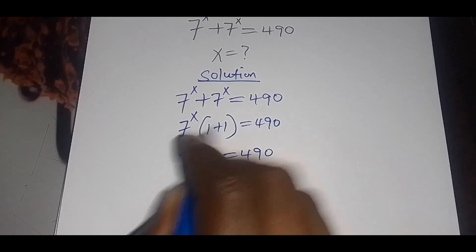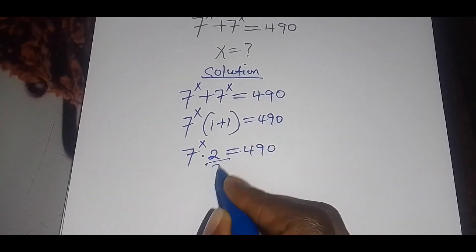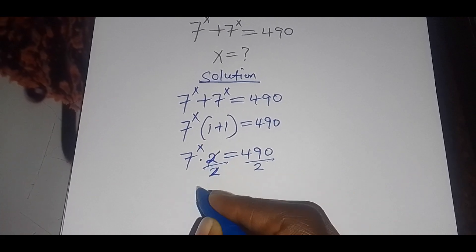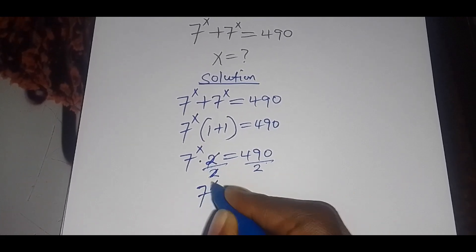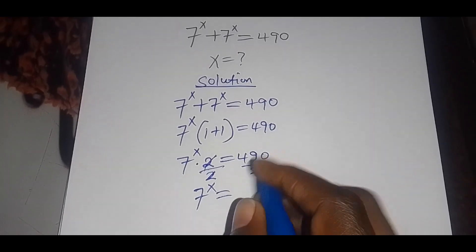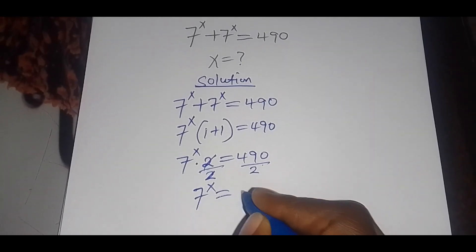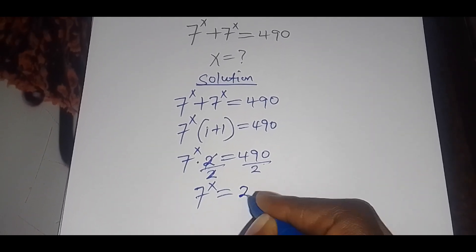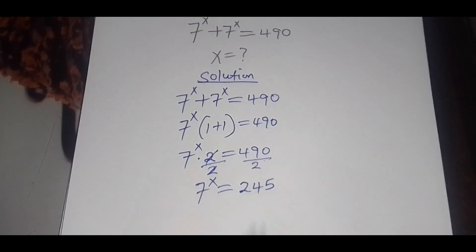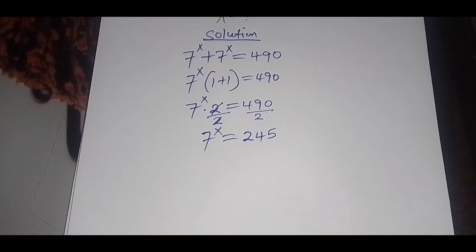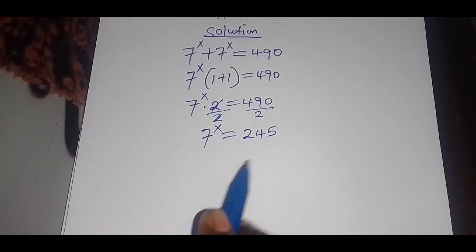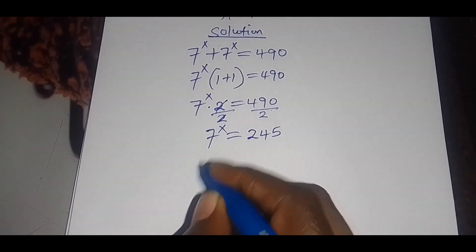So this is 7 raised to power x multiplying by 2, since 1 plus 1 is 2, this is equal to 490. We divide both sides by 2, so that will give us 7 raised to power x is equal to 245.